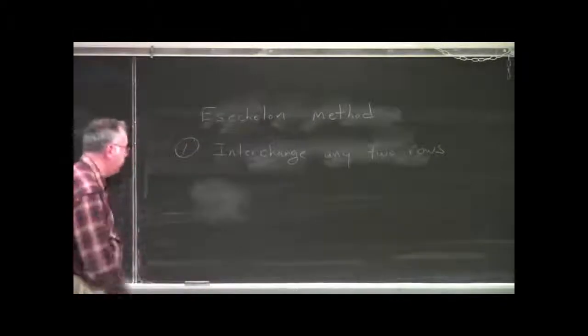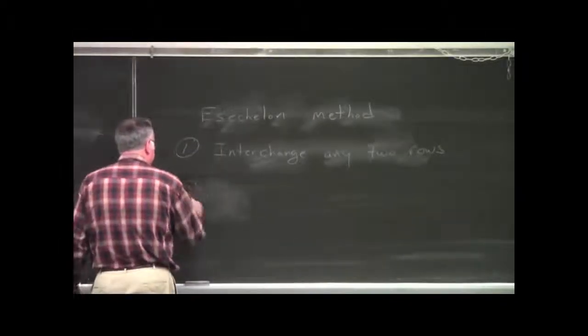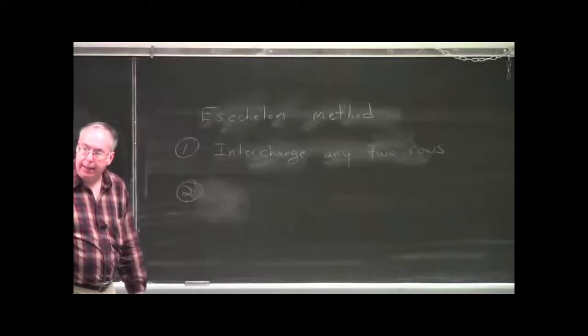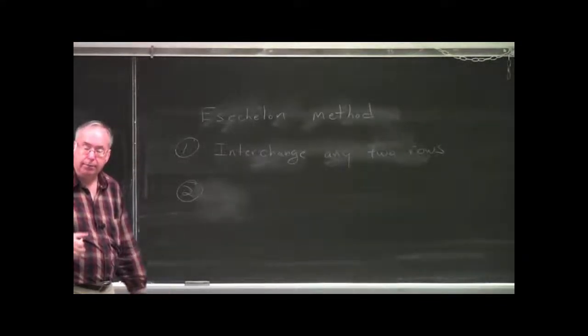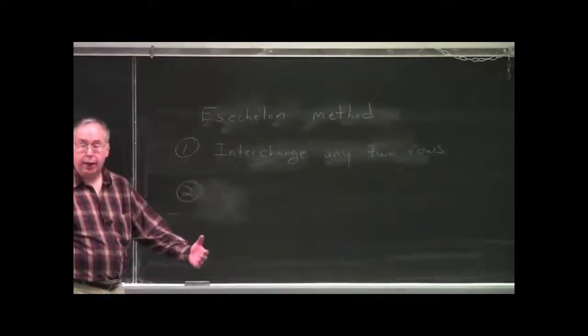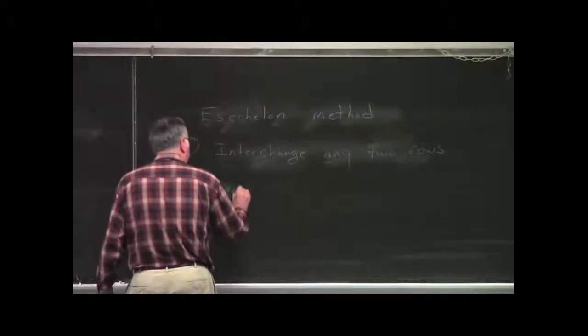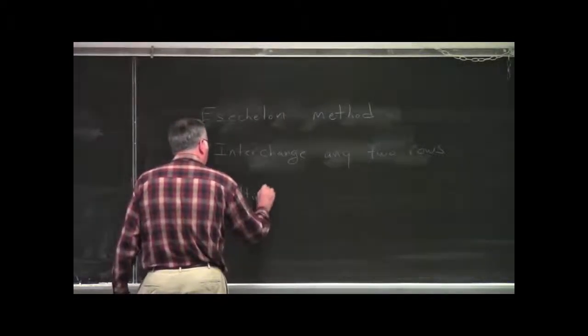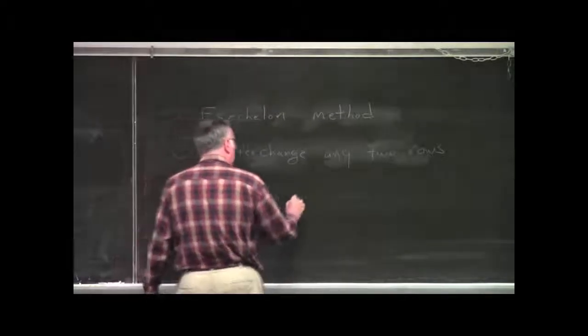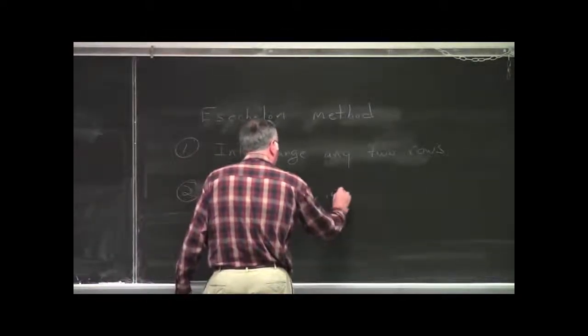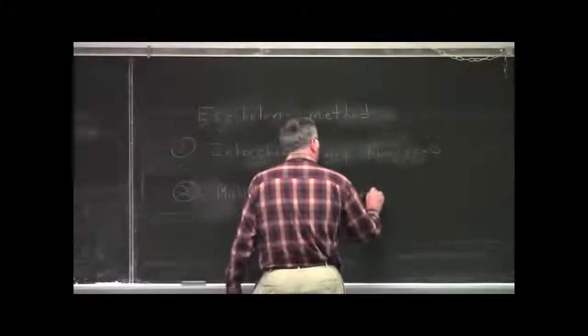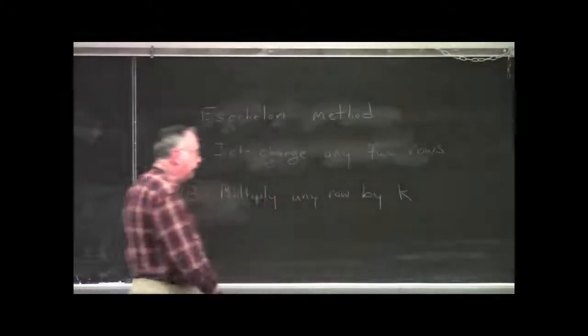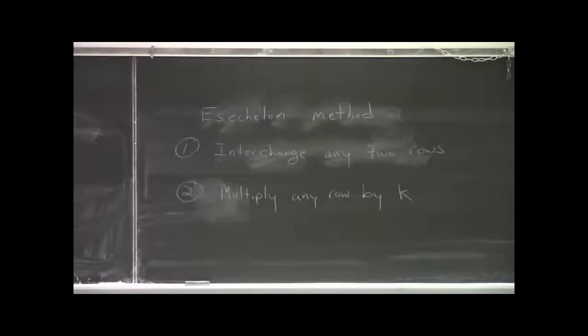The second operation you can perform is, you can multiply any row by a scalar k, by a non-zero scalar k. Where that k is assumed to be non-zero. And, k could be anything, any scalar, other than zero.